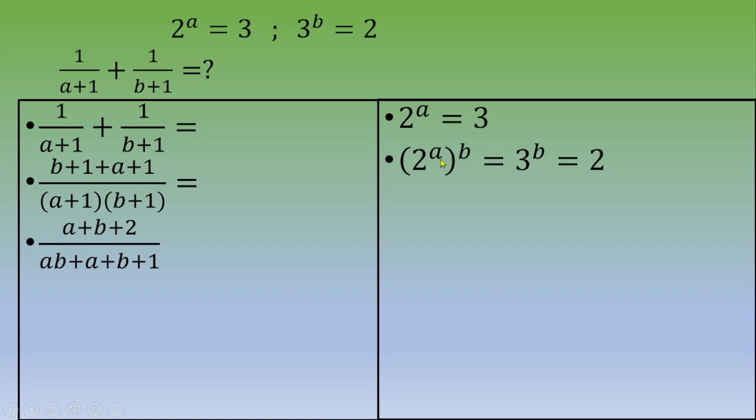2 to the power a raised to the power b equals 3 to the power b, which equals 2. Then you've got a power rule: x to the power a raised to the power b is x to the power ab.